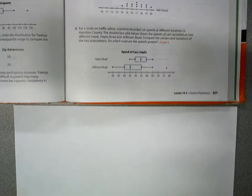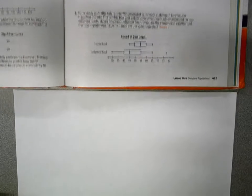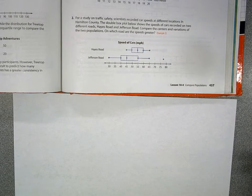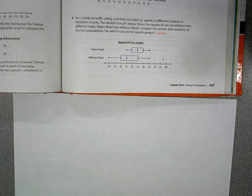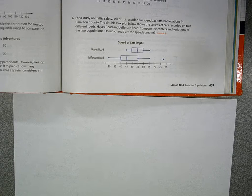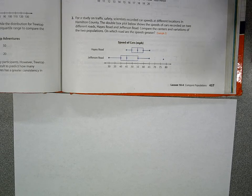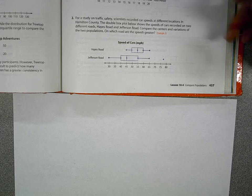So if we take a look at problem number two. For a study on traffic safety, scientists recorded car speeds at different locations in Hamilton County. The double box plot below shows the speeds of cars recorded on two different roads, Hayes Road and Jefferson Road. Compare the centers and variations of the two populations. On which road are the speeds greater?